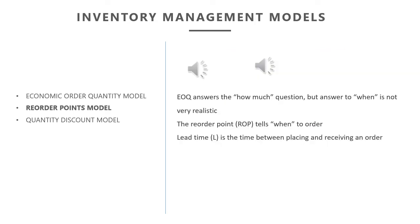The first new model we see today is the reorder point model. In each new model, we remove one assumption from the six EOQ assumptions, giving us a slightly more complex and realistic model. Here, we remove the third assumption — that received inventory is instantaneous. If there is some delay, which we call lead time L, then we should use the reorder point model.